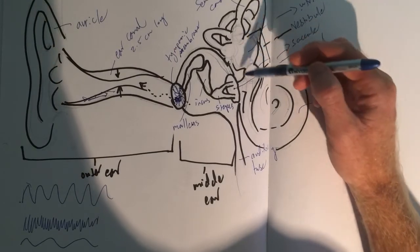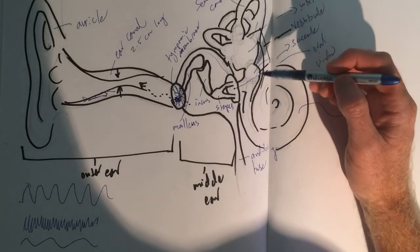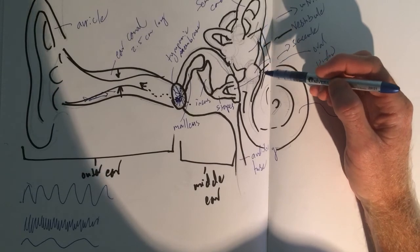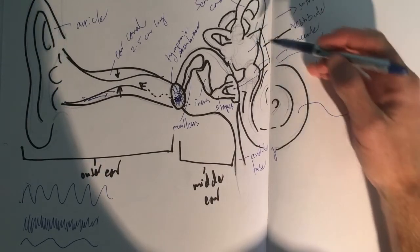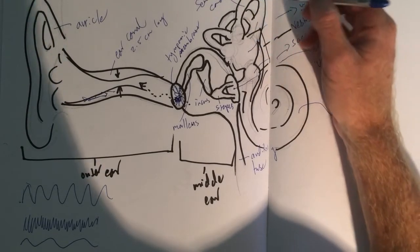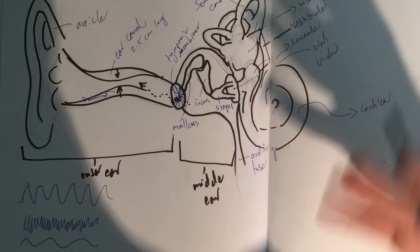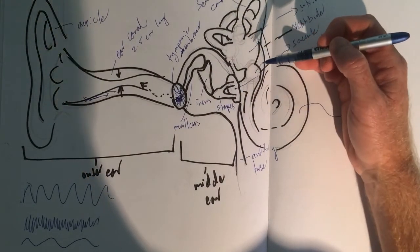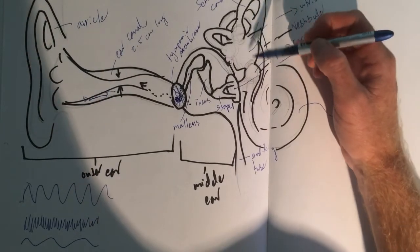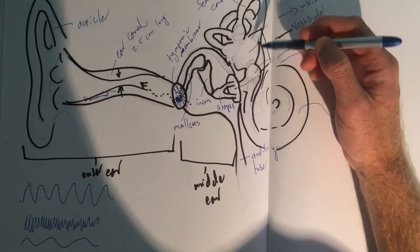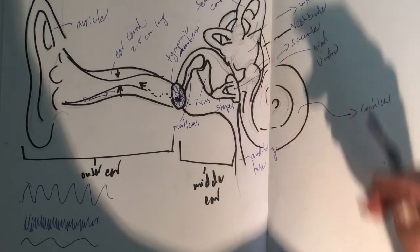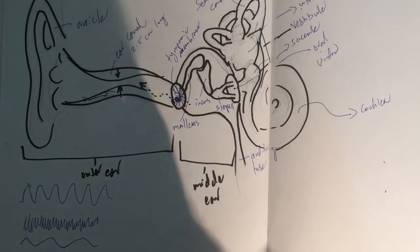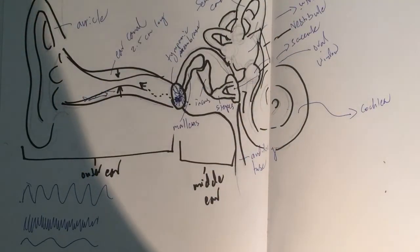Up here, these are the structures. The vestibule encodes acceleration that happens along a linear plane, whereas the semicircular canals, those allow us to feel acceleration that happens due to rotation. So the vestibule allows us to sense the position of our head and body, whereas the semicircular canals, those come active like when you're on a merry-go-round, when you're spinning around.